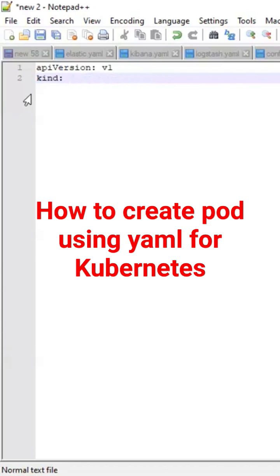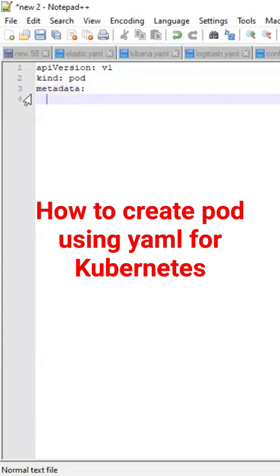If you wanted to just create a pod, you can create a pod also. Then comes metadata — under metadata you can specify child properties. For example, you can provide a name like 'banking', and then if you wanted to specify any namespace, you can do that as well.